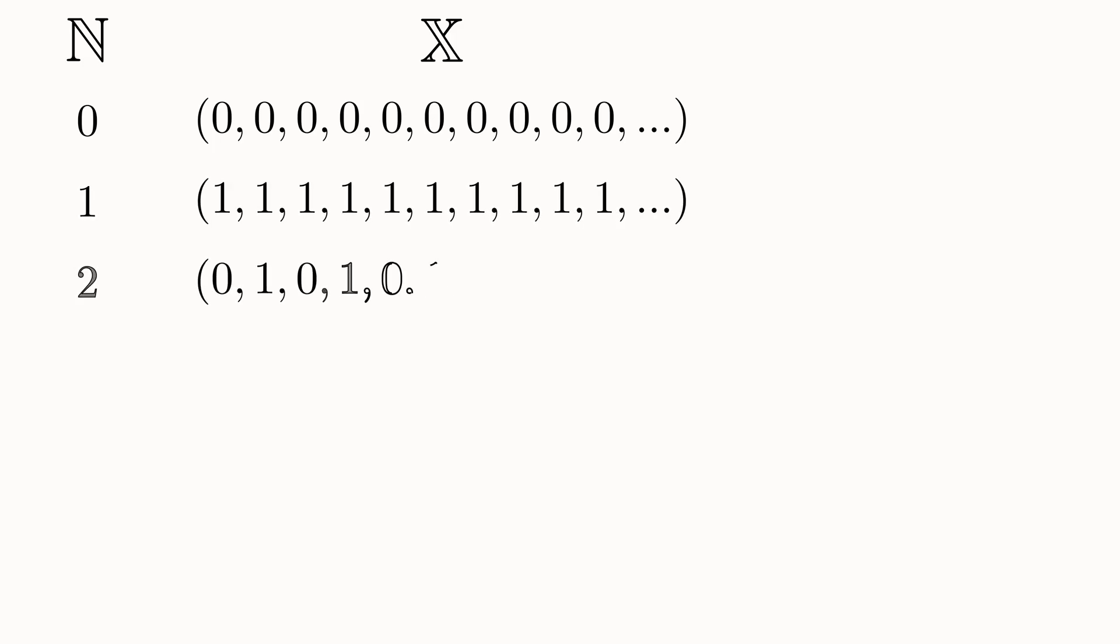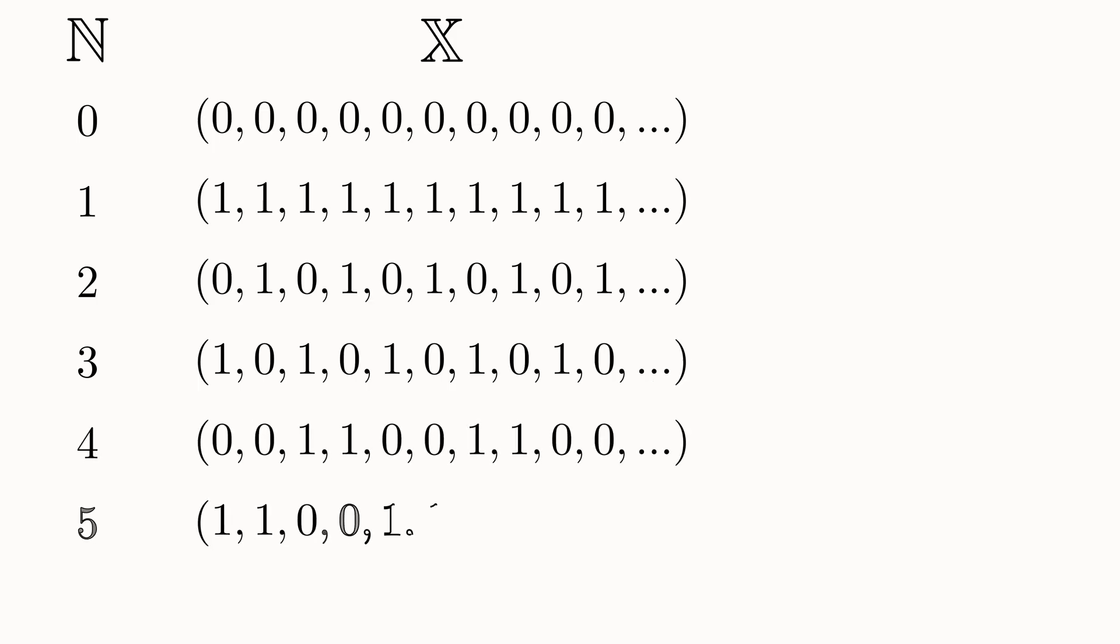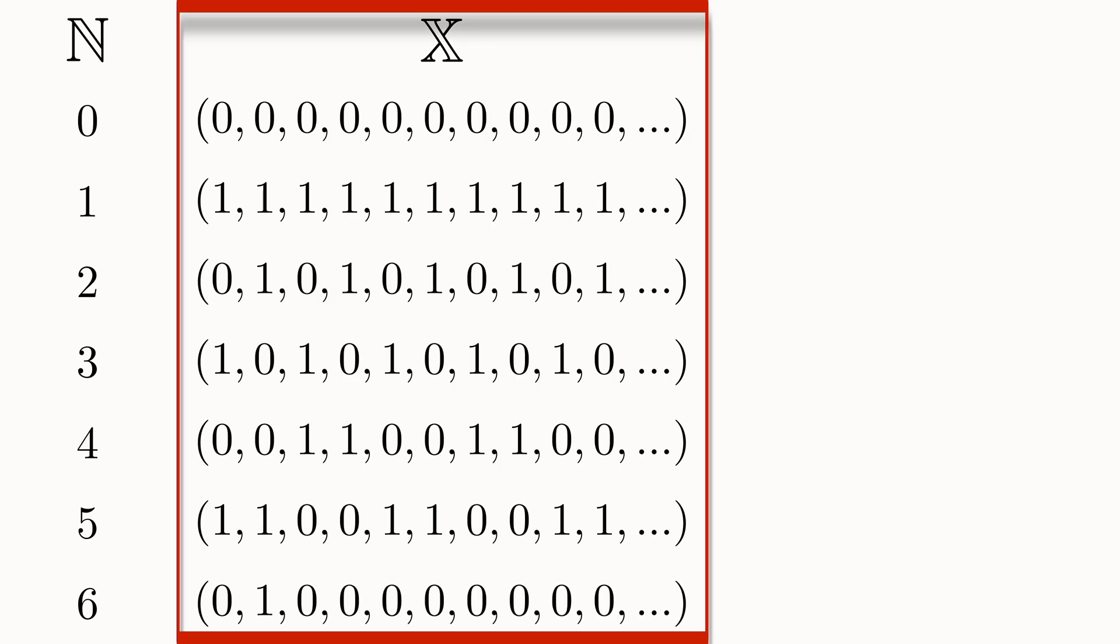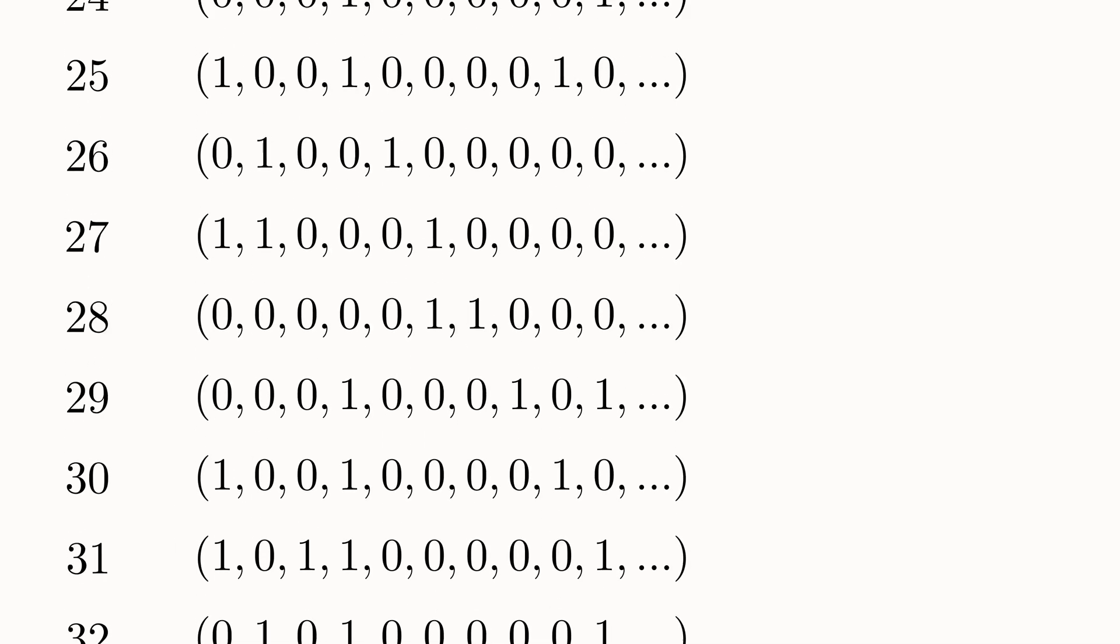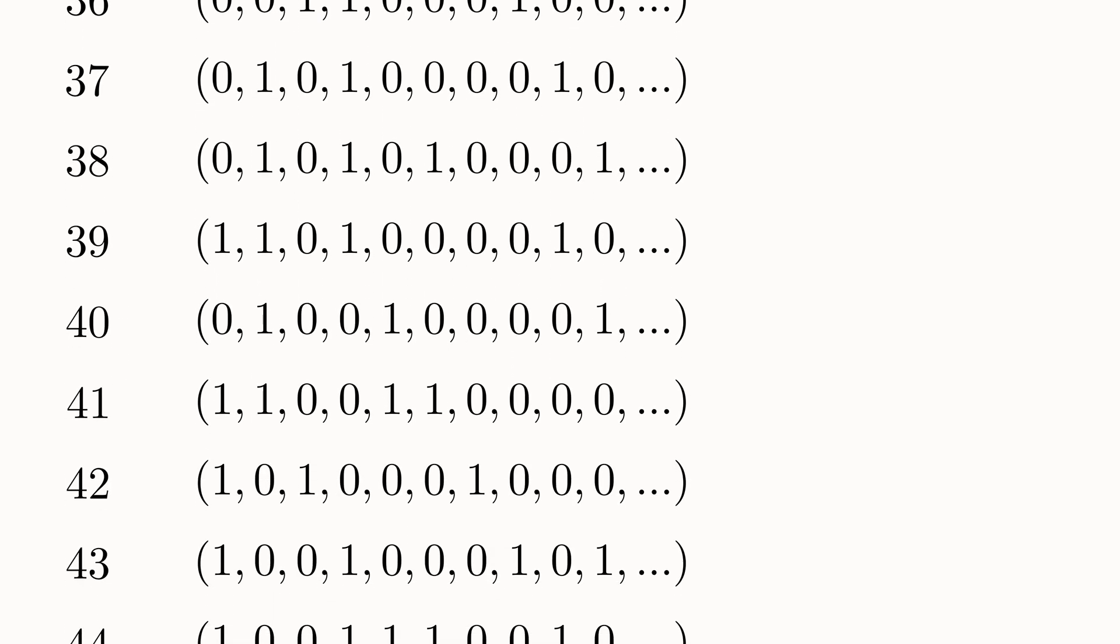To answer these questions, Cantor imagined lining up all the natural numbers one by one, and then associating one real number to each natural number. Rather, what he actually did was to associate a unique infinite binary sequence, so a sequence of ones and zeros, to each natural number. And since there's a one-to-one map from this set, which I'm just labeling as X, to the real numbers, then the argument naturally extends to the real numbers as well. So now we have an infinite list of natural numbers and binary sequences.